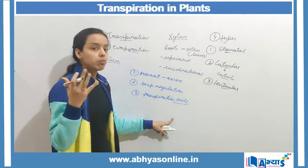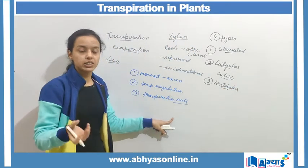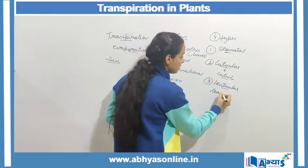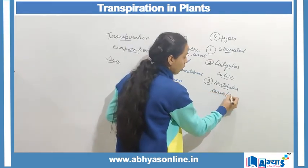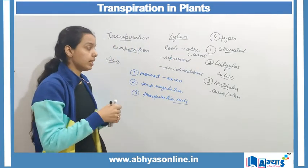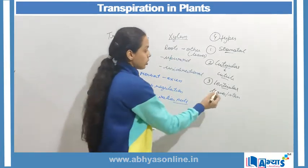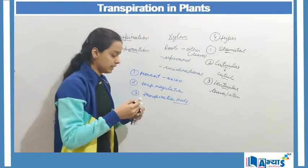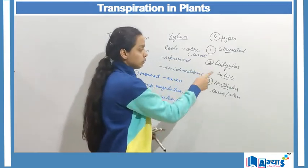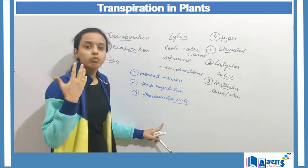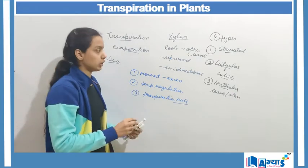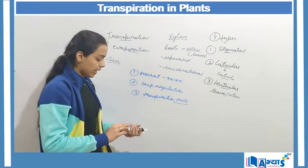The third type is lenticular transpiration. Lenticels are small pores present on the leaves or the stem of the plant. When transpiration occurs through the lenticels, it is known as lenticular transpiration. It is very similar to cuticular transpiration — both occur in very small amounts compared to stomatal transpiration.